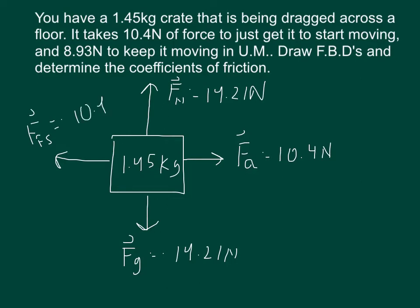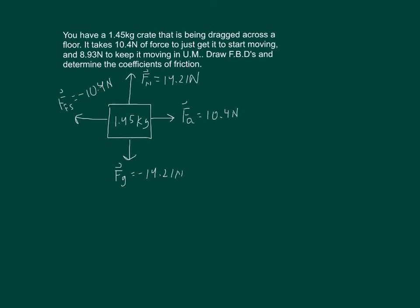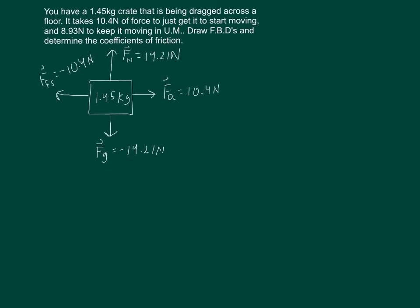It's negative because it's in the opposite direction. Now we're going to solve for mu. Mu is just a ratio of the frictional force over the normal force. In this case, because we're solving for mu static, it's the static frictional force over the normal.